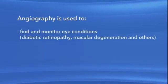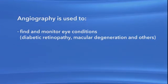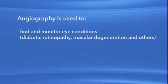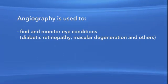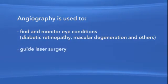Angiography helps your ophthalmologist see what is happening in the retina or in the blood vessels under the retina, called the choroid. Ophthalmologists use angiography to help diagnose and monitor certain eye conditions, such as diabetic retinopathy and macular degeneration, among others. Also, if you are going to have laser surgery on your retina, your ophthalmologist may use angiography to help guide the laser with pinpoint accuracy.